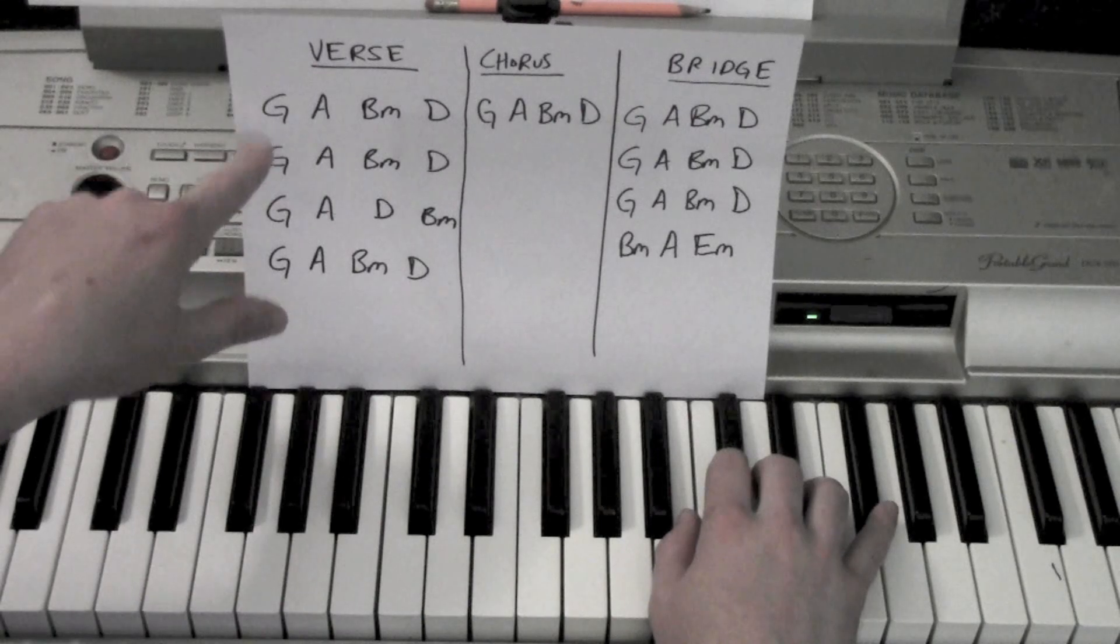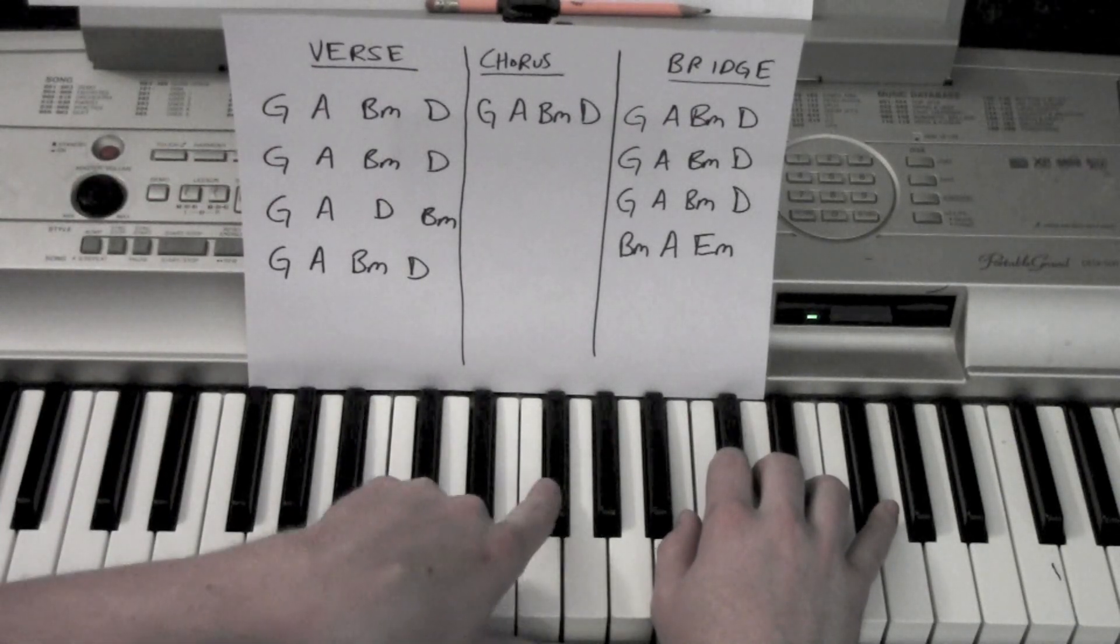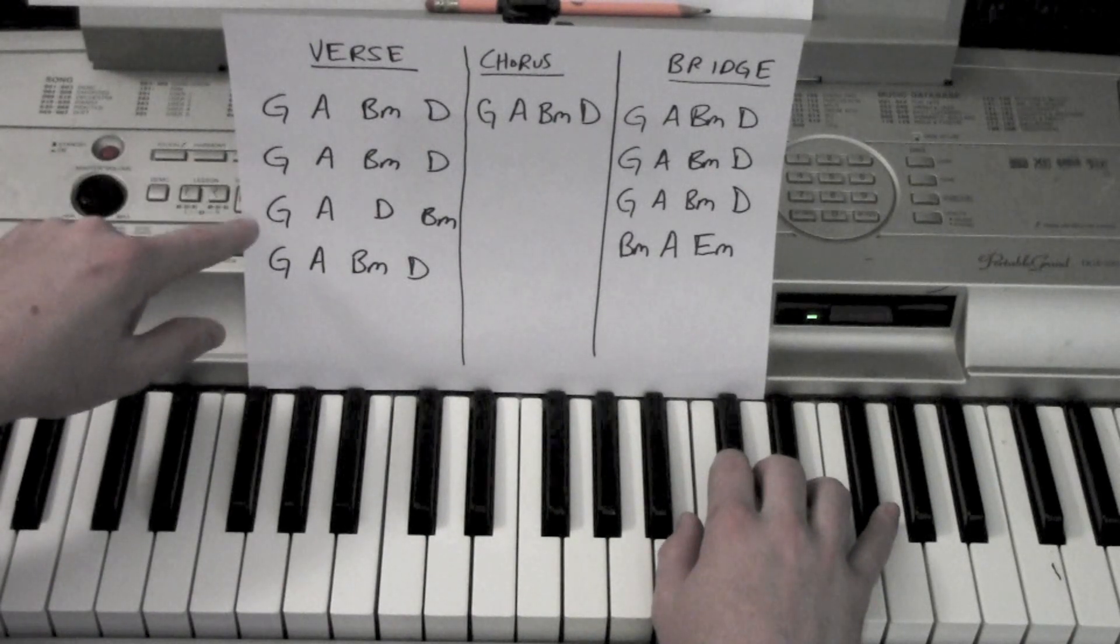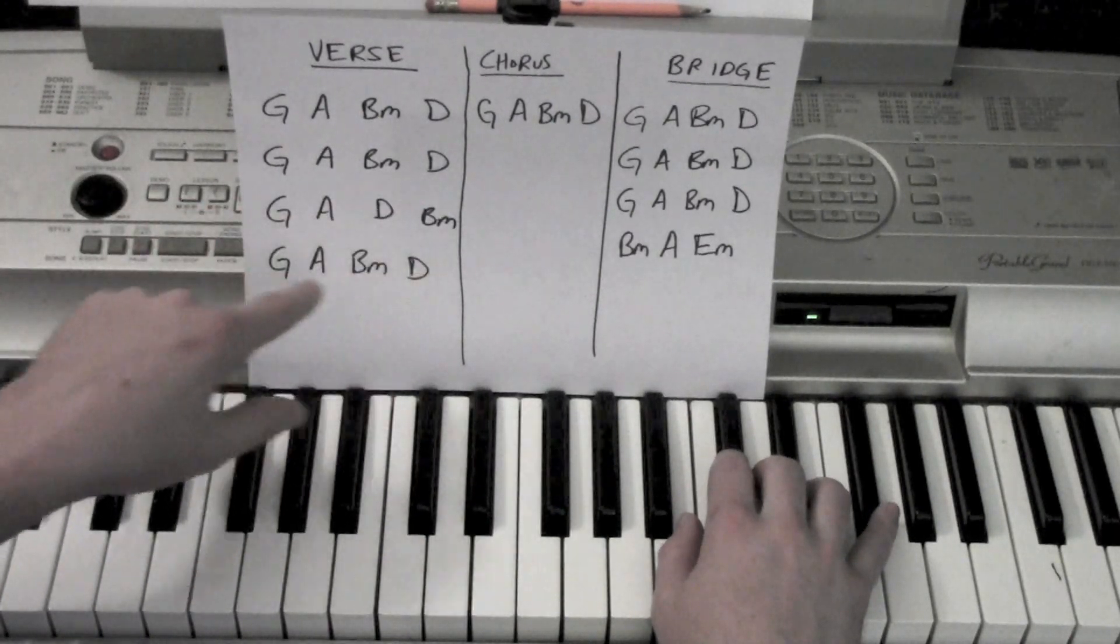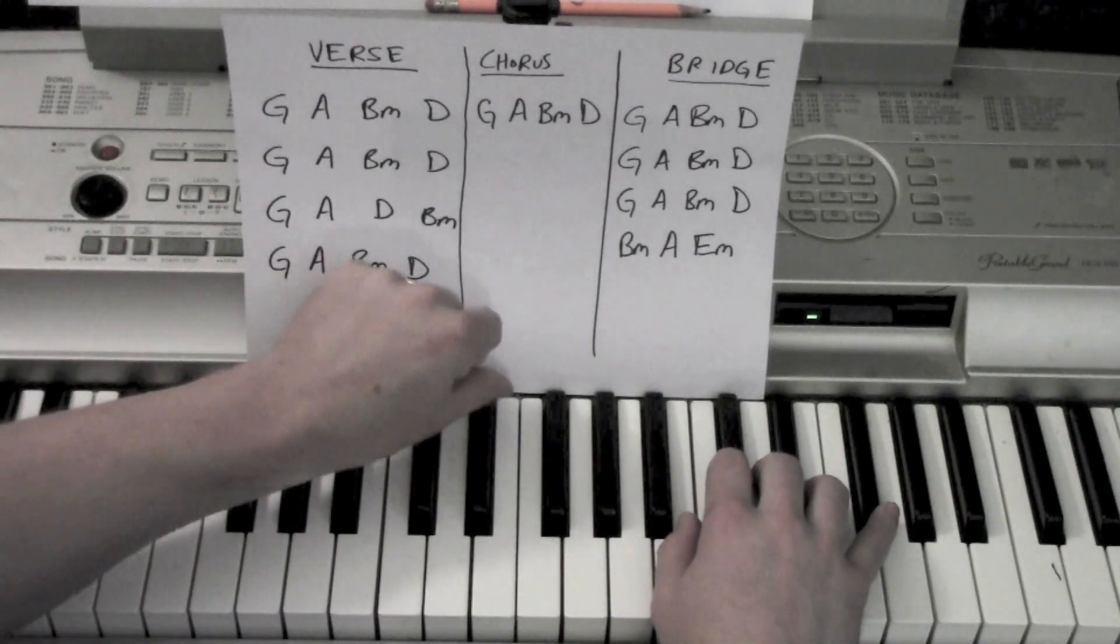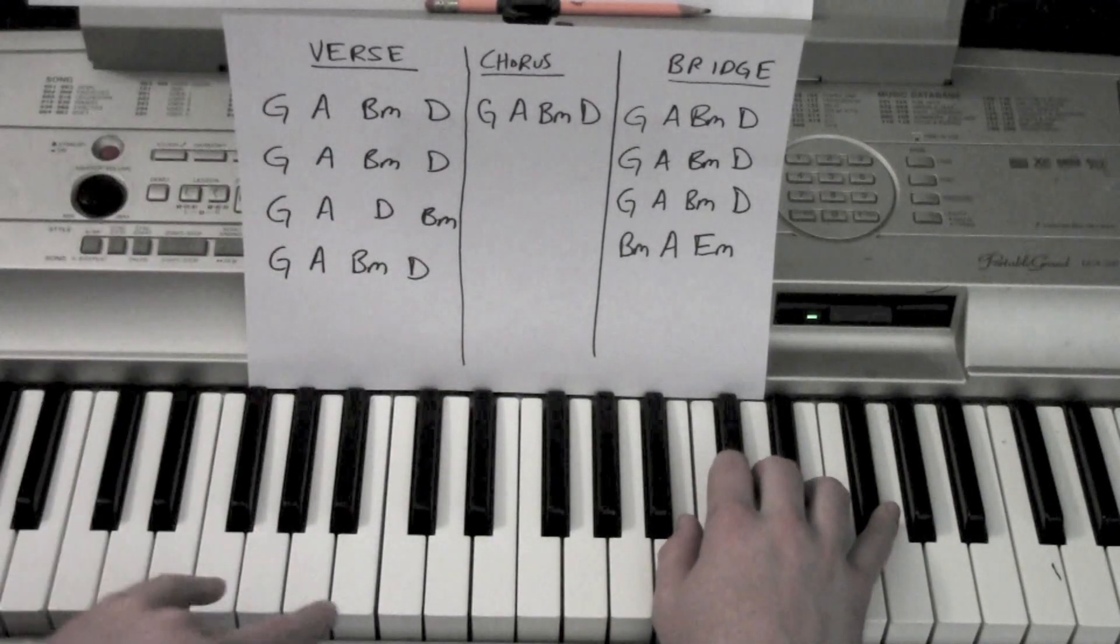The verse goes G, A, B minor to D, two times in a row. And then the next time it goes G, A, D, B minor. Last time it goes back to that first pattern: G, A, B minor, D. So let's go through some of the verse.